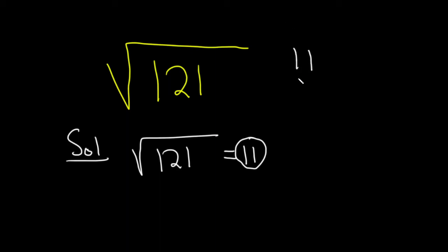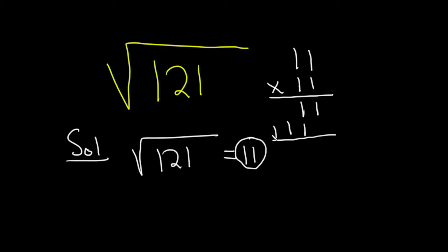We have 11 times 11. We're going to multiply it this way. So you do 1 times 1, which is 1, 1 times 1, which is 1, 1 times 1, which is 1, 1 times 1, which is 1. Then you go to the second number and the second line: 1 times 1 is 1, 1 times 1 is 1. You draw a line and you add, so you get 1, 2, 1. So it checks.